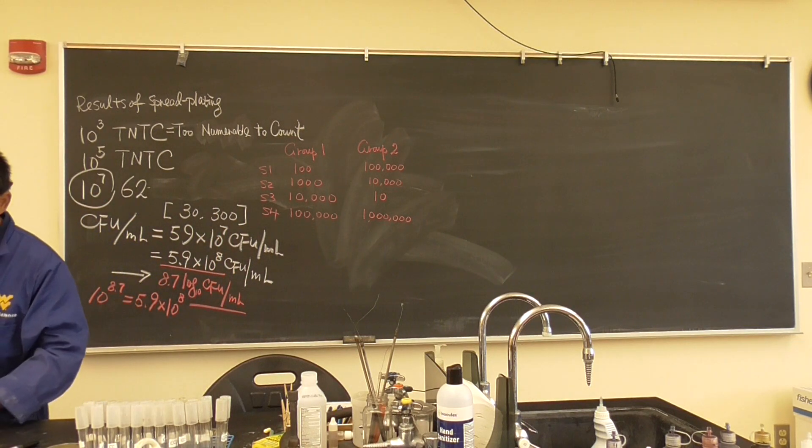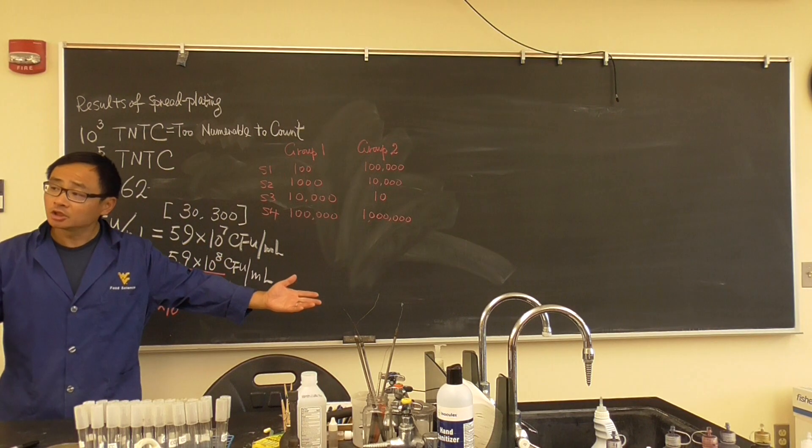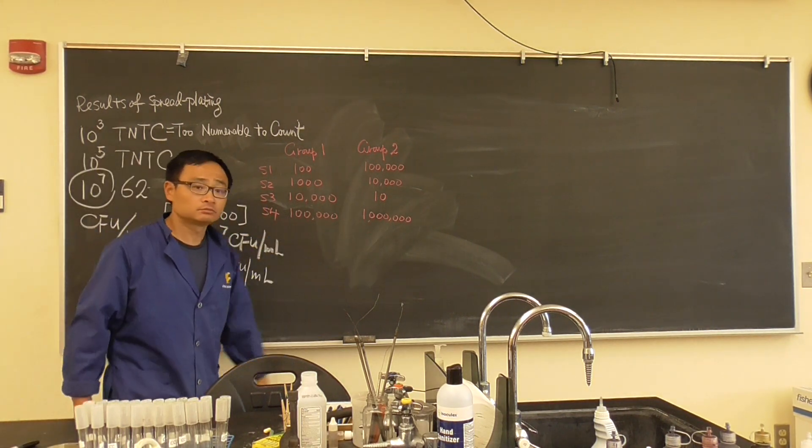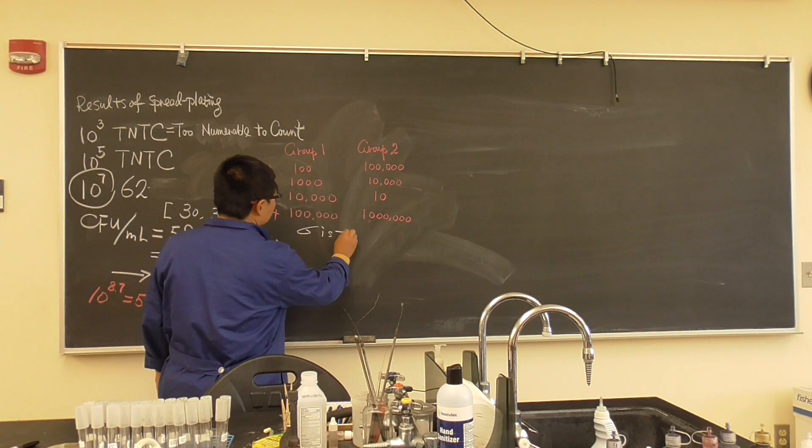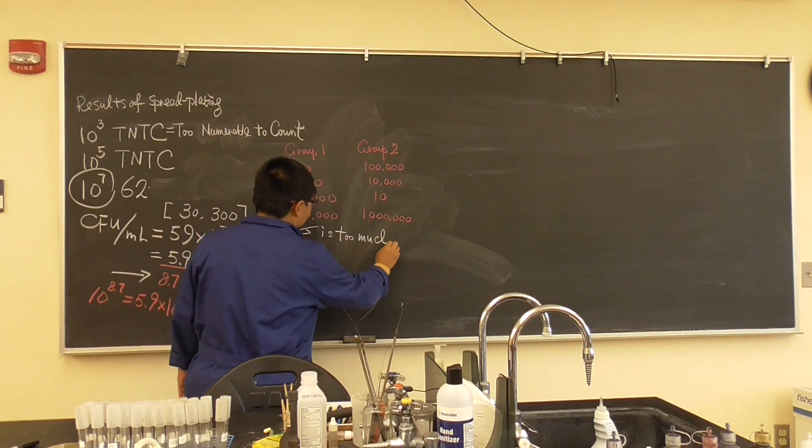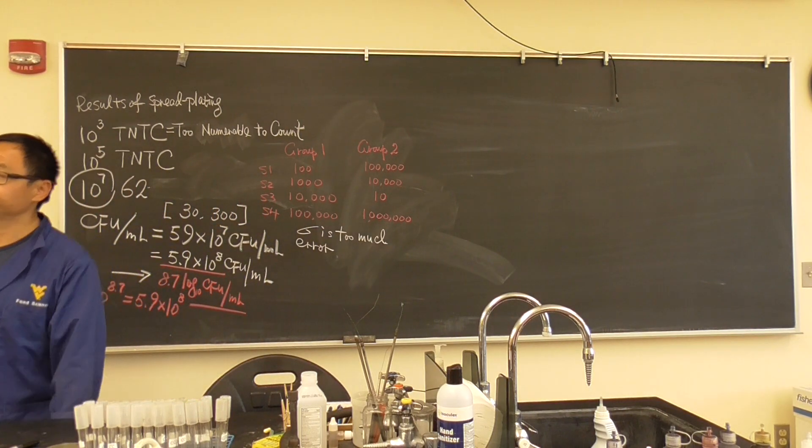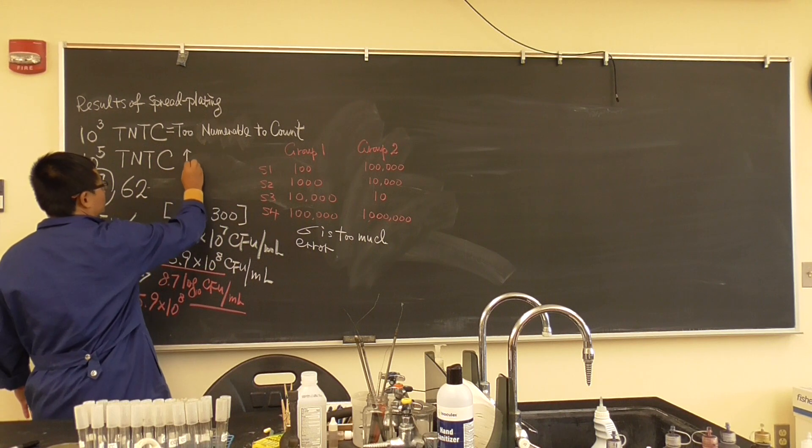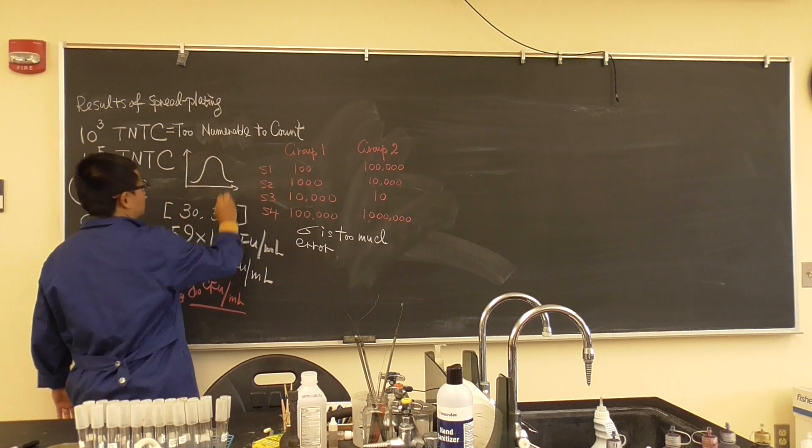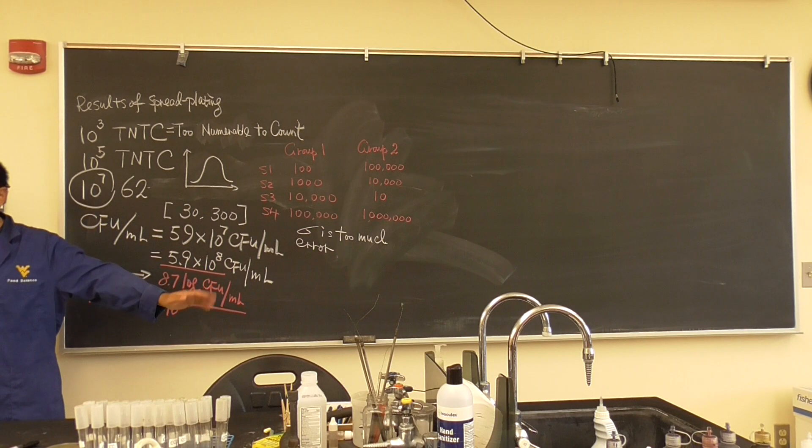So here is a question: can we do a statistics analysis and a comparison between these two groups? No. Because the error is too much. And this is what you learn in your statistics class. You cannot do it. It's not normally distributed, is that right? What is normal distribution? That is normal distribution. This is not. So you cannot do statistics analysis. The error is too large.